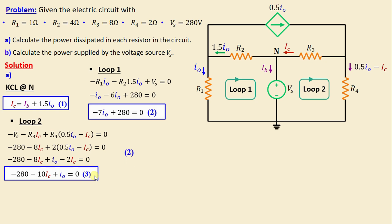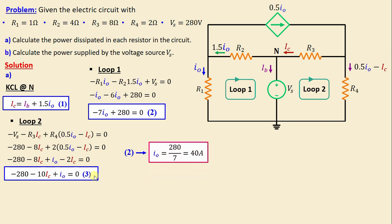Starting with Equation 2, we can write IO = 280 / 7, giving IO = 40 amps. Moving on to Equation 3, we can write IC = (IO − 280) / 10.